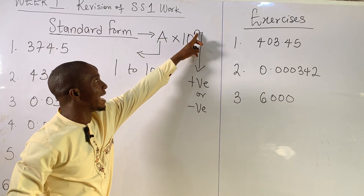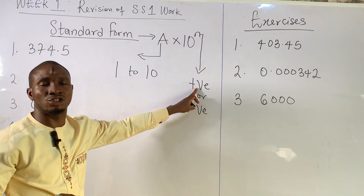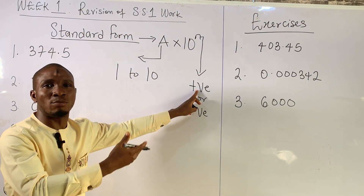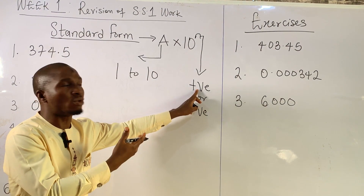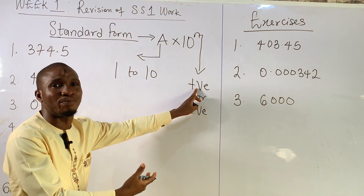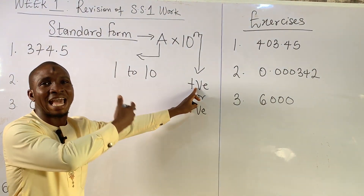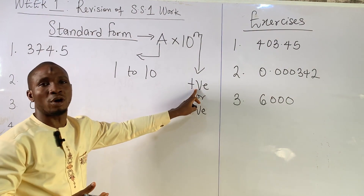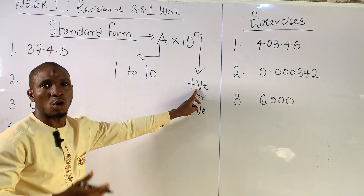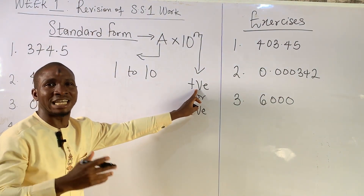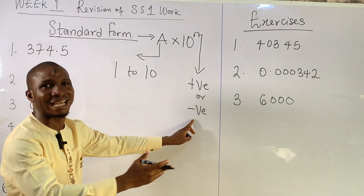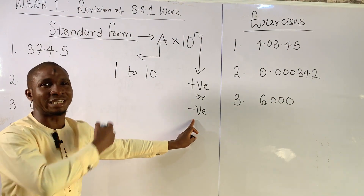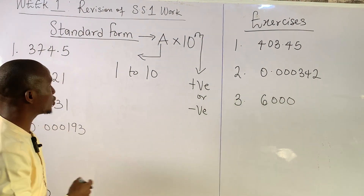N is going to be a positive integer depending on where you are moving the decimal point. When you are moving the decimal point to the left-hand side, N is going to be positive. But when you are moving the decimal point towards the right-hand side, it's going to be negative. Let's pick up an example to demonstrate that.